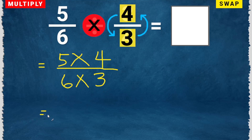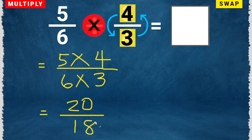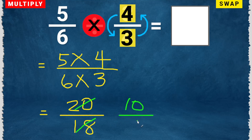5 times 4 is 20, over 6 times 3 is 18. This can be simplified by dividing by 2. So 20 divided by 2 is 10, and 18 divided by 2 is 9. So the answer is 10 over 9.